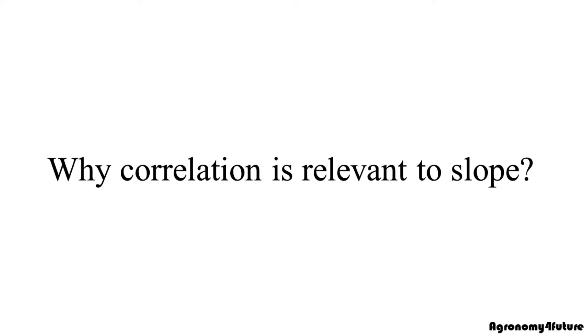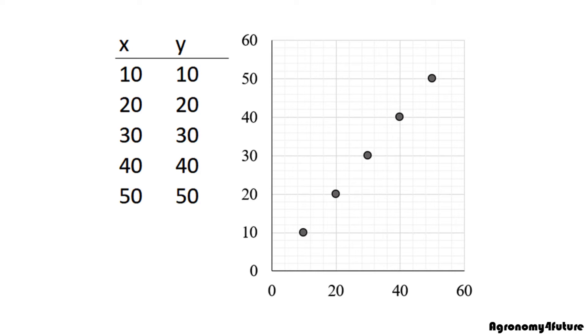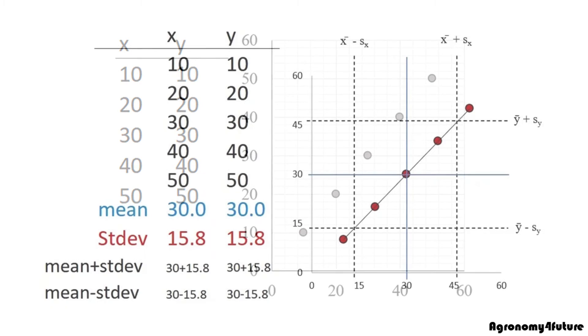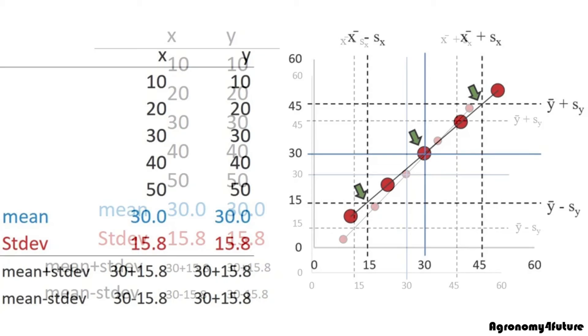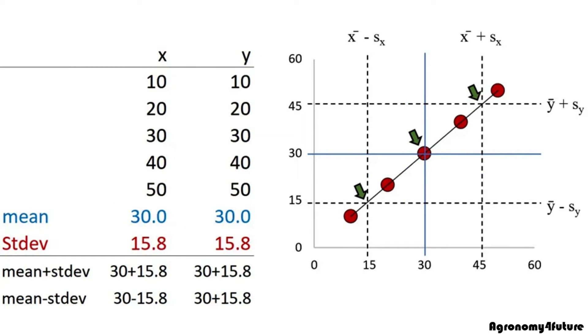First, we need to understand why correlation is relevant to slope. Let's think about this. If x and y is the same, the scatter graph would be like this. Now, I'd like to draw lines about mean, and mean plus minus standard deviation of x and y. I did draw lines like this. Did you find an interesting thing? The trend line goes through between the mean of x and y, and the line also goes through between mean of x plus minus standard deviation and mean of y plus minus standard deviation.